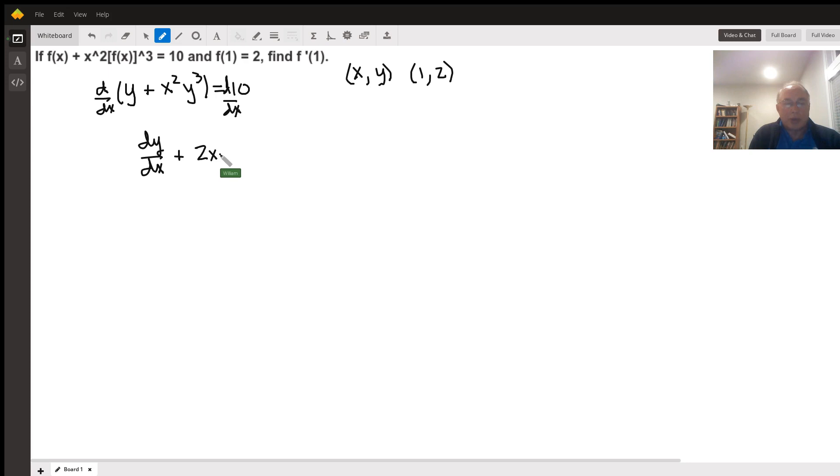That's 2x times the second plus the derivative, the first times the derivative of the second. The derivative of y cubed is going to be 3y squared,